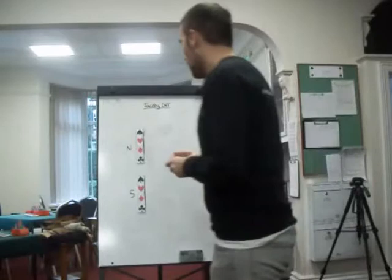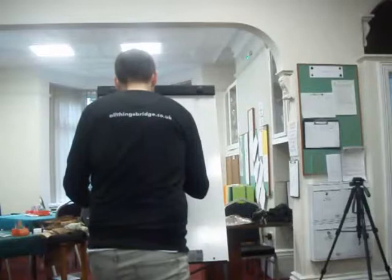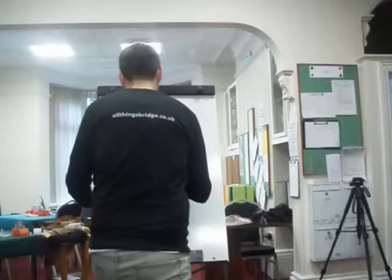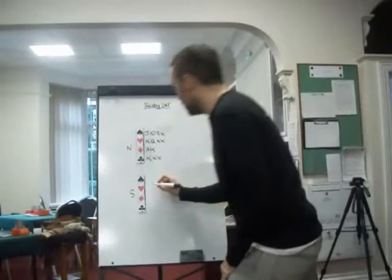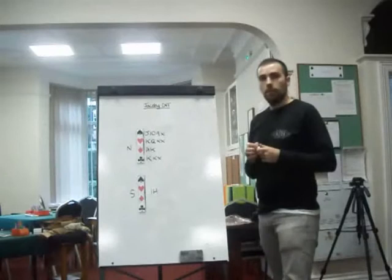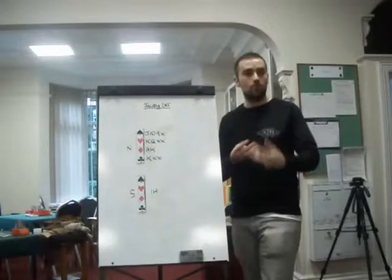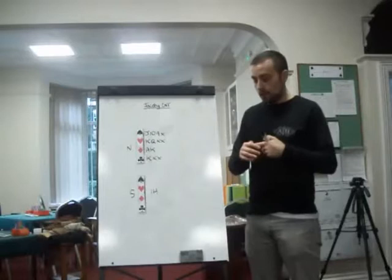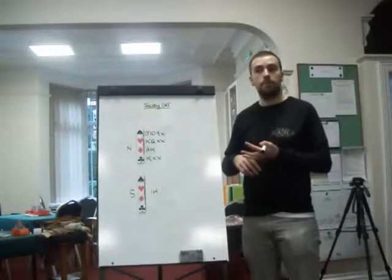So what is it? It is a way of game forcing whilst agreeing a major. So I'll give you the problem first and then tell you the solution. Our partner opens one of a major, let's say one heart for now. Now the problem with this hand is that your hand is too good. But the problem we have is that any bid we make that has hearts in it - two hearts, three hearts, four hearts, six hearts - all of that is non-forcing.